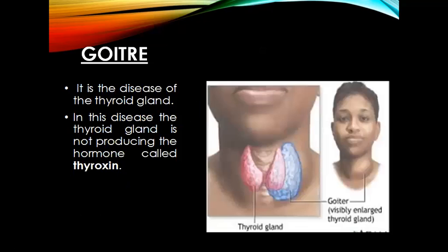Now let's discuss a few disorders caused by a lack of hormones in sufficient amounts in the human body. The first disorder is goiter. It is a disease of the thyroid gland, in which the thyroid gland is not producing the hormone thyroxine in the proper amount. So the patients have a big and bulging throat, as shown in the image.